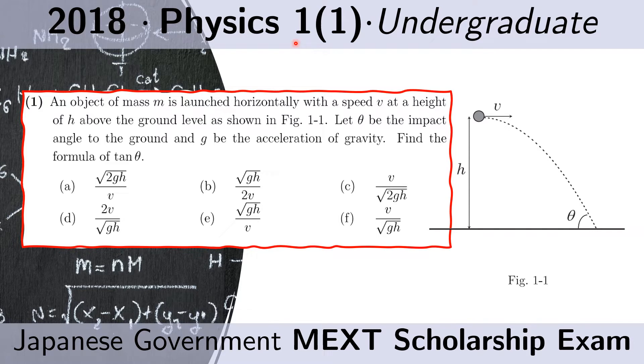Problem 1 of 1. An object of mass m is launched horizontally with a speed v at a height of h above the ground level as shown in Figure 1-1. Let theta be the impact angle to the ground and g be the acceleration due to gravity. Find the formula of tangent theta.